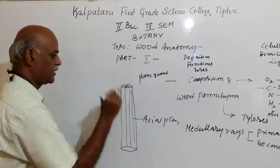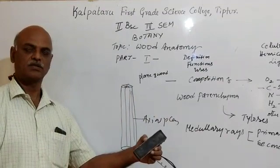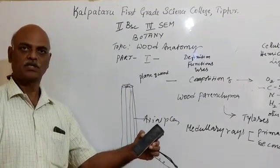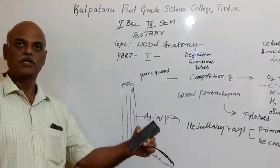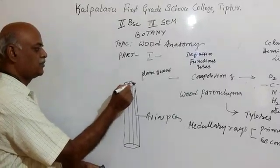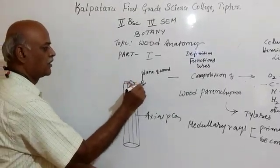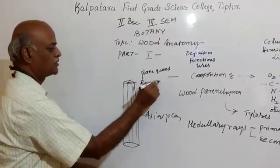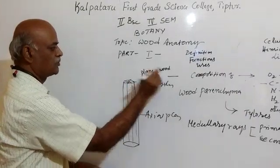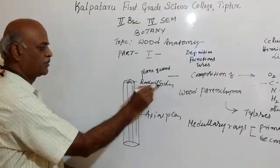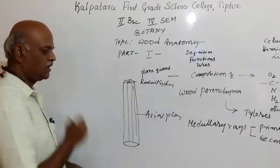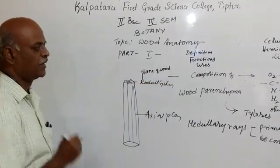The other one is from center to periphery. If you take a log of size 5, 6, 8, or 10 feet diameter, from center to periphery, this is called the radial system. Wood exhibits radial system and axial system.